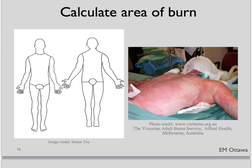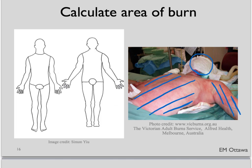Let's calculate the area of burn in a sample patient. The burn involves his anterior chest and abdomen, the whole left arm (top, bottom, front, and back), and his whole head and neck (anterior and posterior). The anterior trunk is 18%, the whole left arm is 9%, and the front and back of the head is 9%. So the total body surface area burned in this patient is 36%.